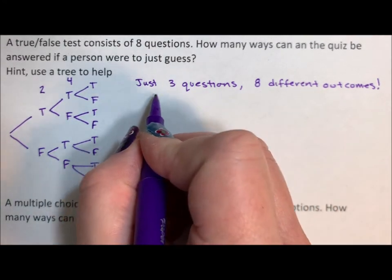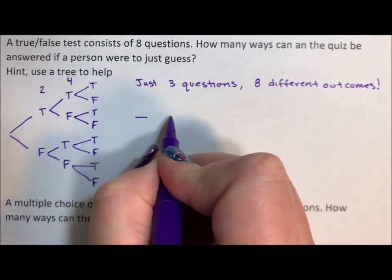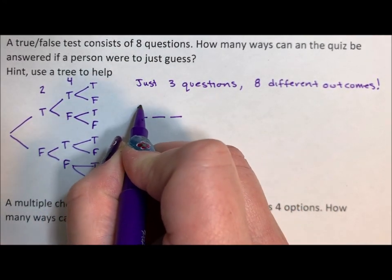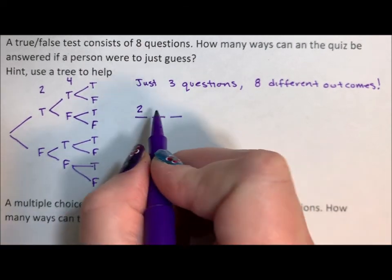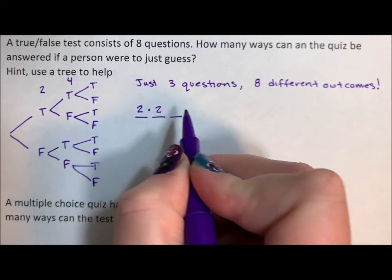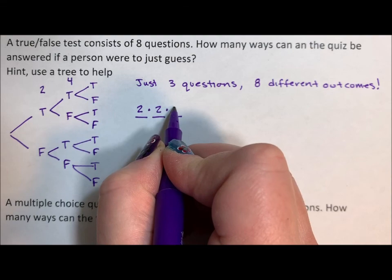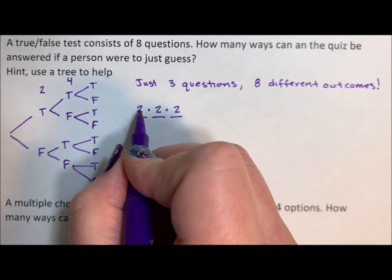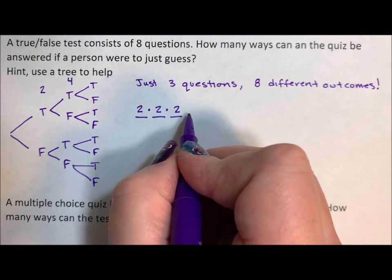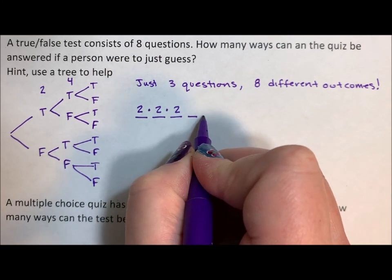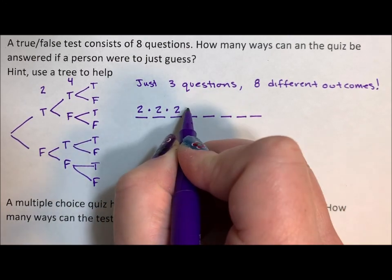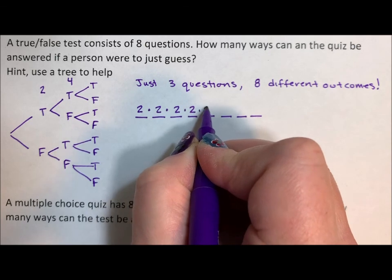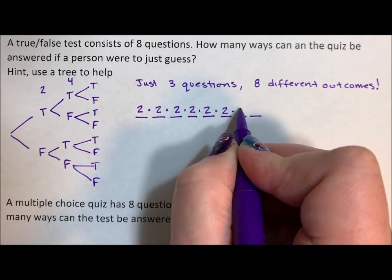So let's see. To get from three questions to eight, what we did is we took the two possible answers for the first question times the two possible questions for the second, two possible answers for the third, and two times two times two is eight. Well, we have five more questions: three, four, five, six, seven, eight, and we continue to have two possible answers per question.